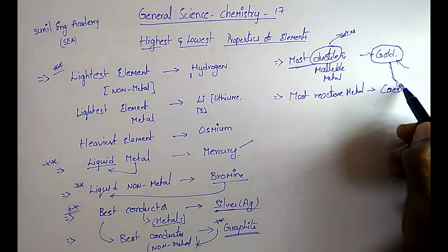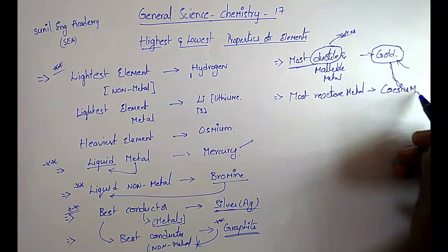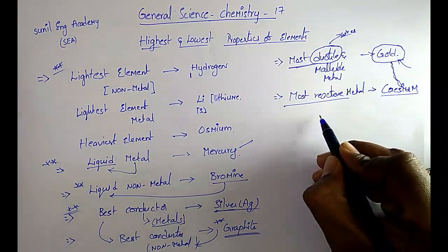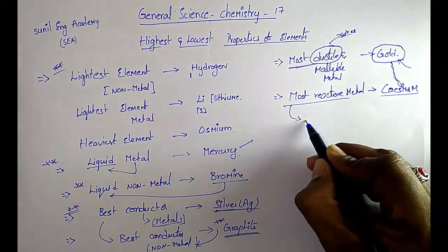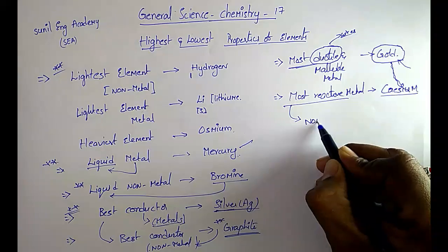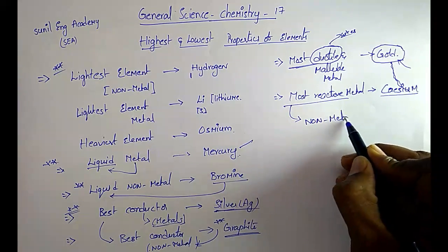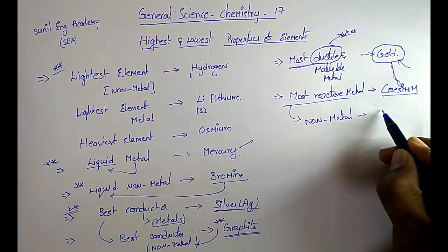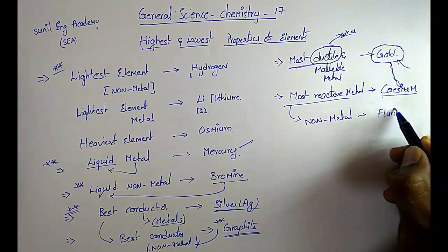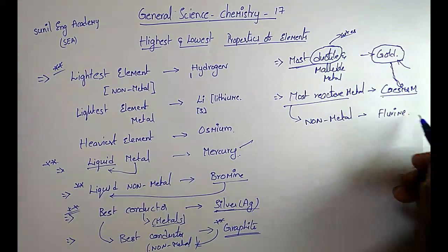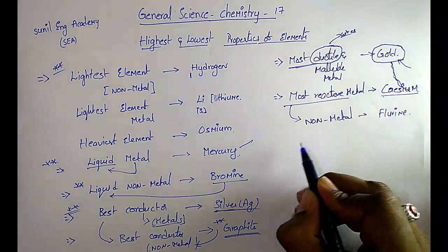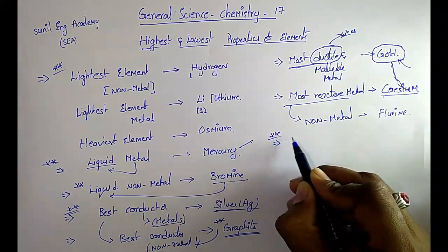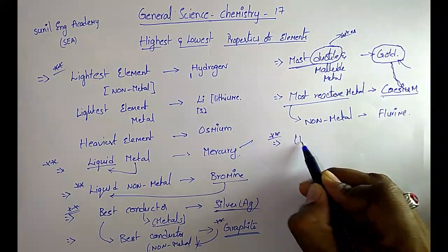The next one: most reactive metal. That is cesium — cesium is the most reactive metal. And in case of the most reactive nonmetal, that is fluorine. So, the most reactive metal is cesium and the most reactive nonmetal is fluorine.